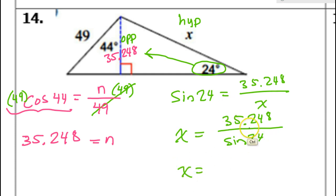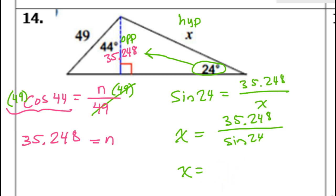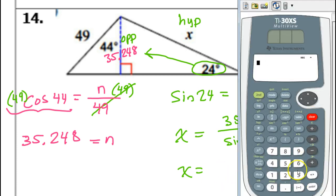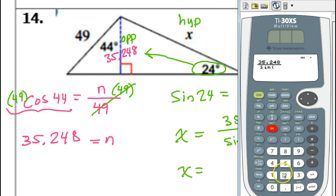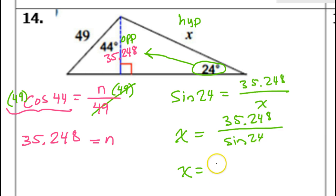You can just put this whole expression in your calculator. When the variable is in the denominator, you can swap these. So that's going to give you X is equal to 35.248 over sine 24. That's 86.660 — don't round up. And that's how you find an unknown side when you have two right triangles stuck together.